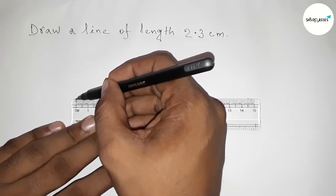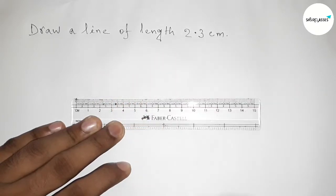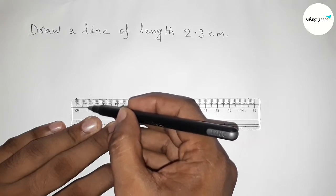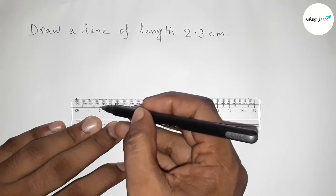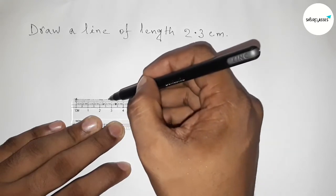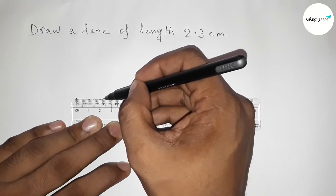First, marking this starting zero. And now counting, so from this, this is one centimeter, and this is two centimeters. And now counting here, one, two, three. So this is two point three centimeter length, and marking this two point three centimeter.